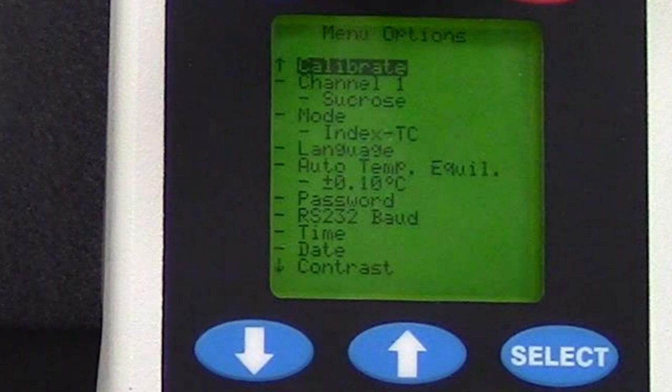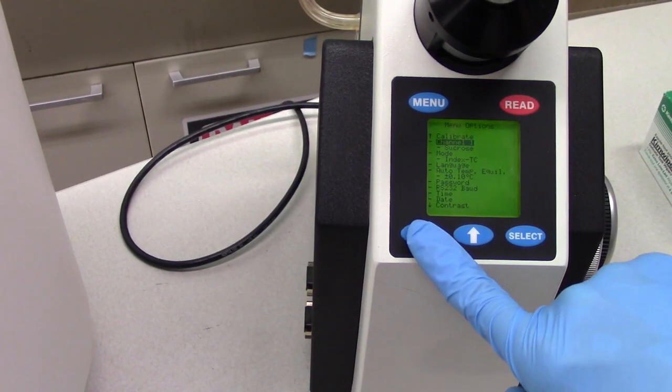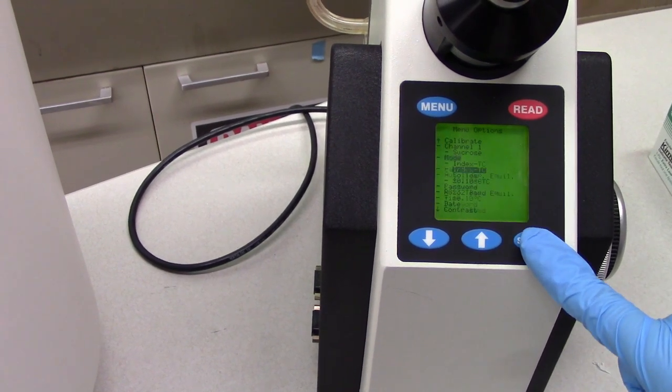On this screen, ensure that the setting under Channel 1 is Sucrose and the setting under Mode is Index TC. If the settings are not correct, navigate the menu with the arrow buttons and press Select.